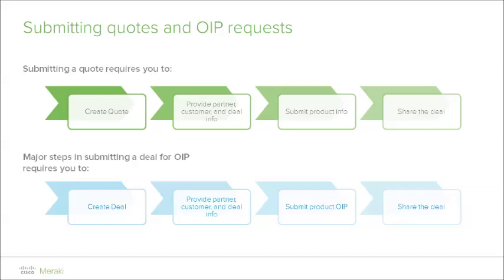A quick overview of the progression in submitting a quote or deal for OIP: this is a simplified, high-level overview that generalizes the major steps, starting with creating the request, validation of the partner and deal info including the deal ID, submission, and finally sharing and approval of the opportunity.